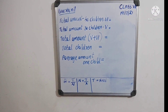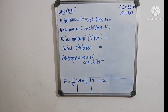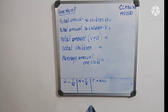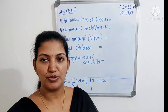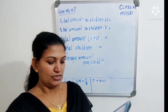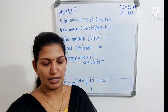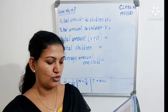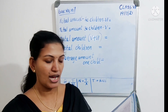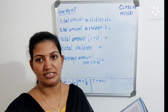Next question. 40 children of class 6 donated 50 rupees on average to the mutual aid fund. 30 children of class 5 donated 8500 rupees in all. If we consider both classes together, how much did each child donate on average? This question is related to the mutual aid fund — children donated money. It is given how much each class donated separately, and we have to find the combined average donation per child.